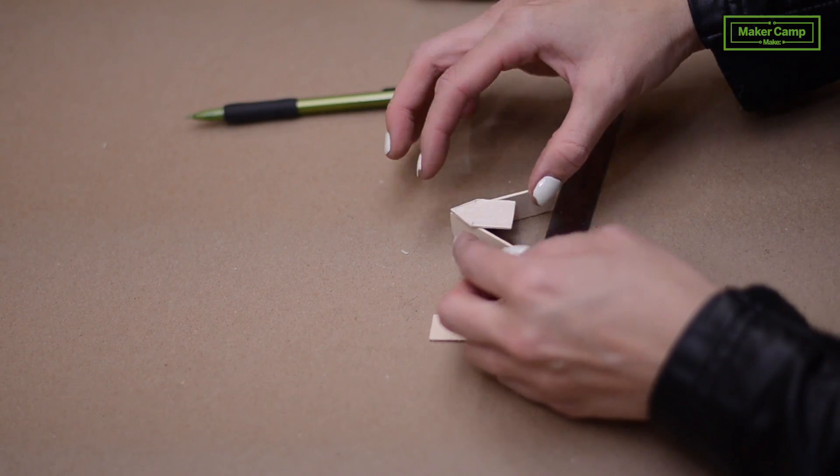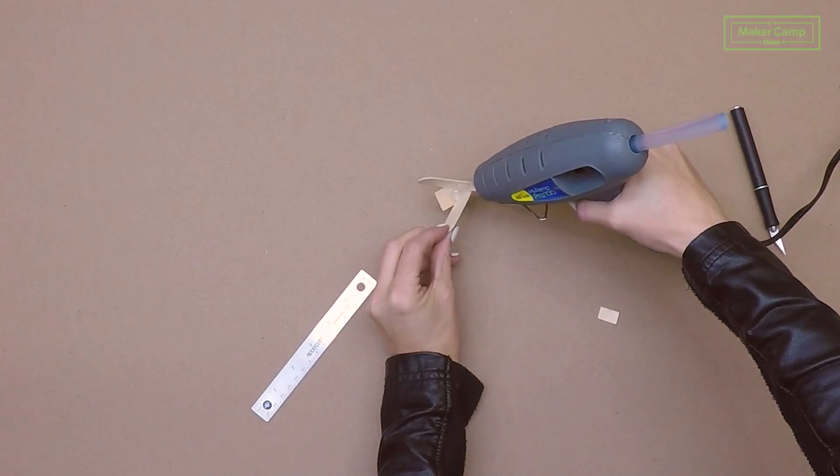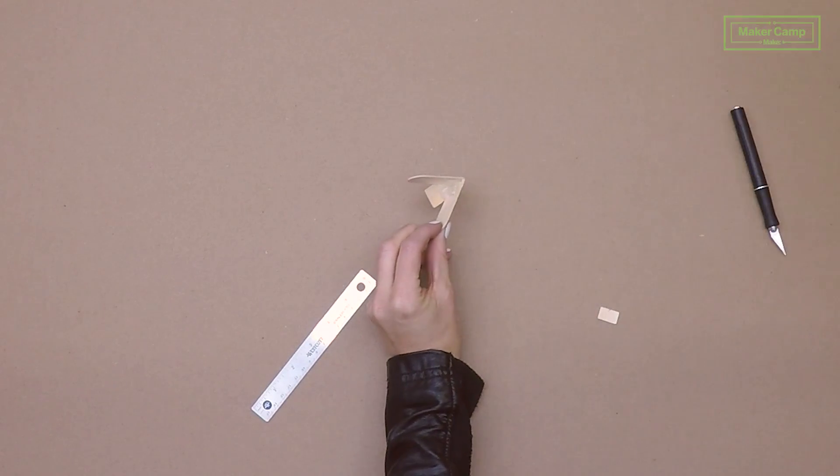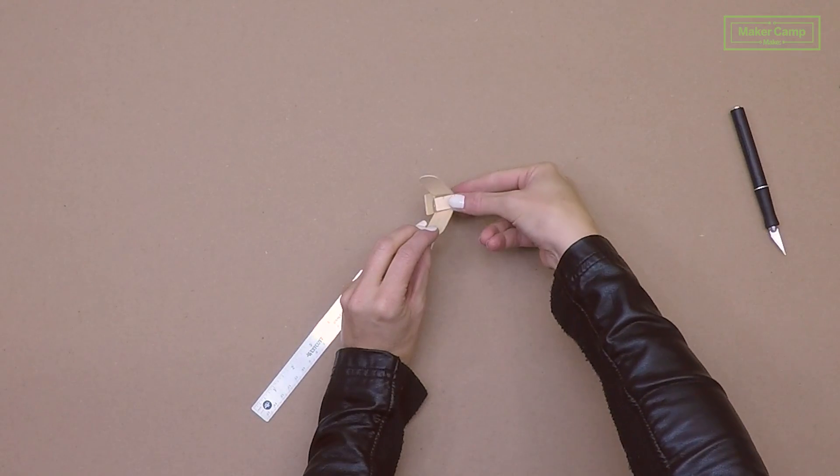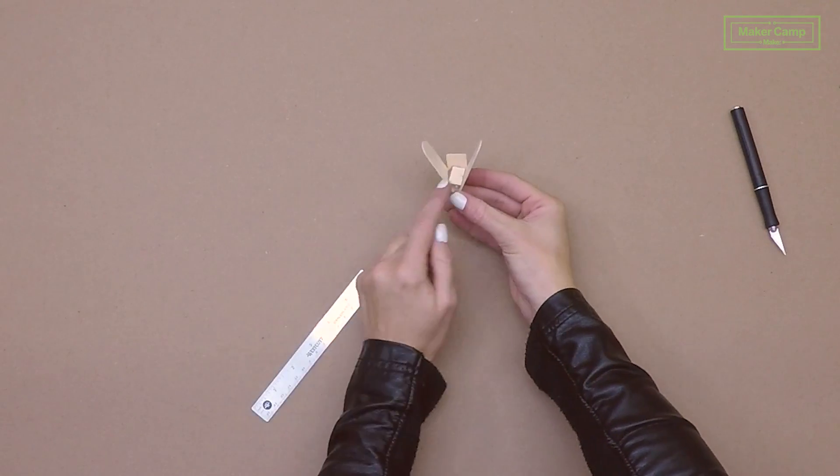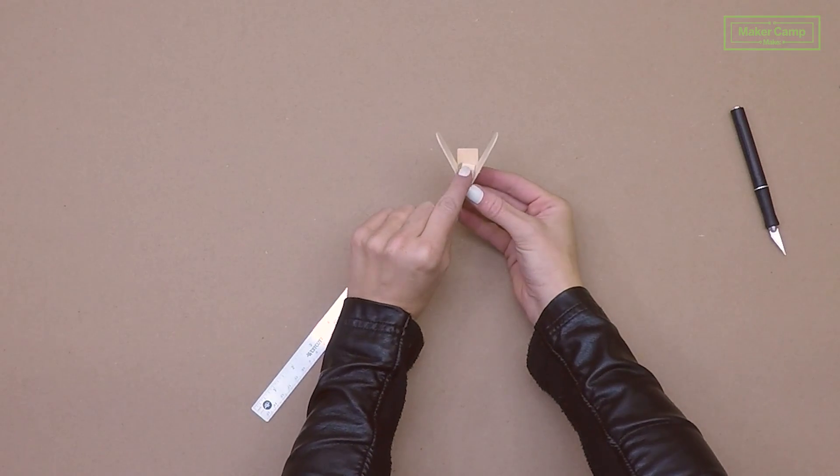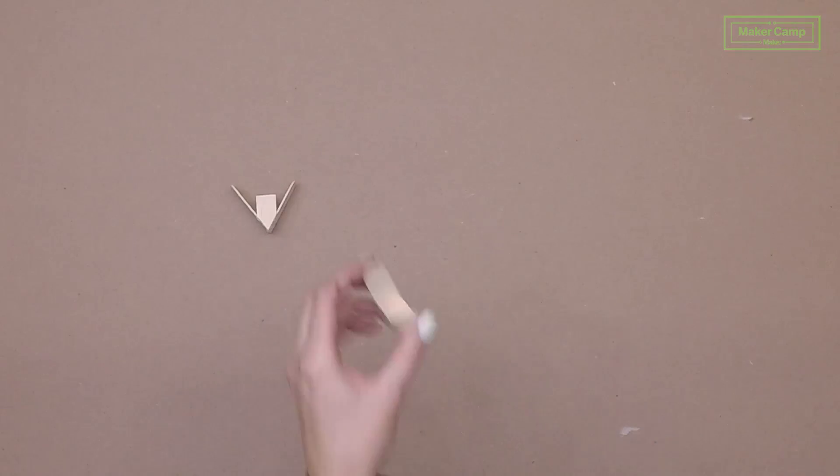Glue your little house-shaped piece of wood upside down to the front of your pocket. Next, put some hot glue down on the bottom of your pocket and then place your little wooden ramp right on top of it, sloping downward towards the back of the pocket. Make three more.